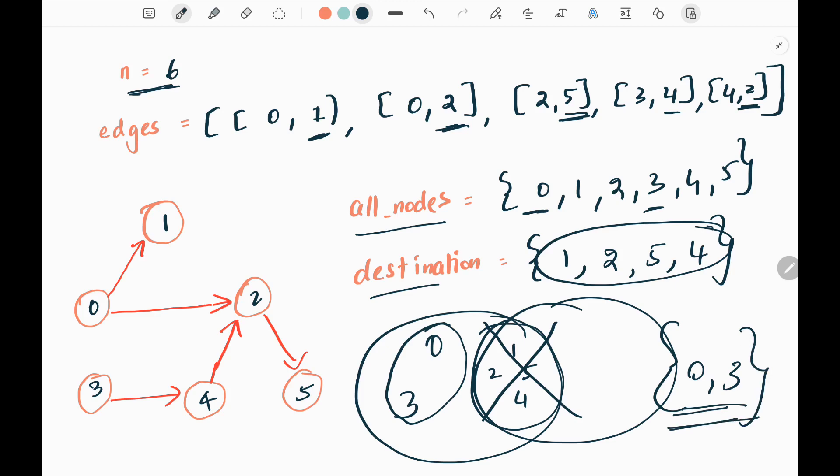In this example, from zero and three I can reach all the nodes in the graph. Let's check. From zero I can go to one and two. From two I can go to five. So I started at zero and I reached one, two, and five.